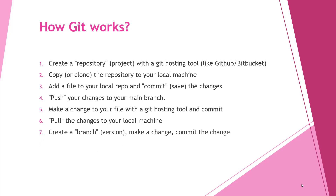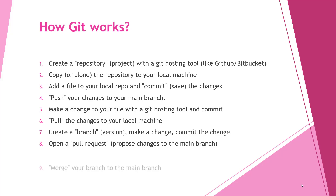You can also create a branch, make changes, and commit those changes. To open a pull request means proposing changes to the main branch. If someone changes the code and wants to merge it into the main or release branch, they raise a pull request, a reviewer reviews and approves the code, and then it gets merged into the main branch.